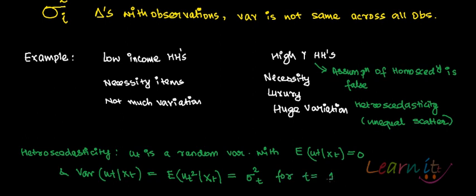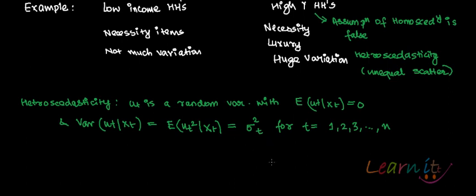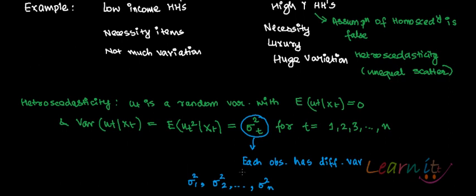t for t equals to 1, 2, 3, and so on to n, if there are n observations. So remember, this has each observation with different variance. So first observation might have the variance of sigma square one, sigma square two, and so on to sigma square n. And this is the assumption of heteroscedasticity.